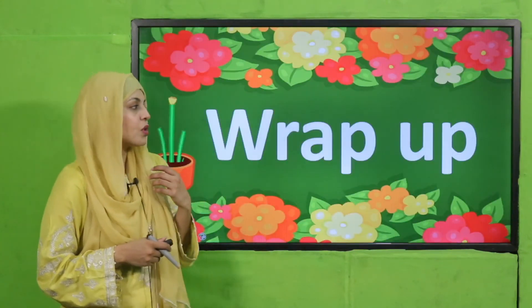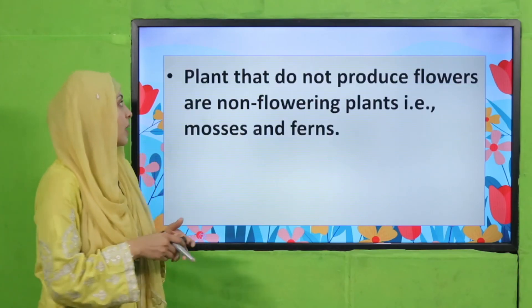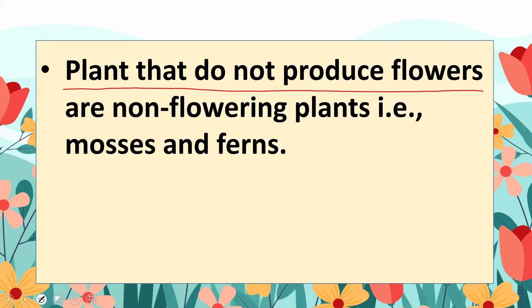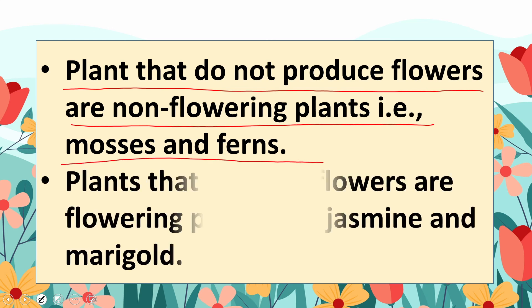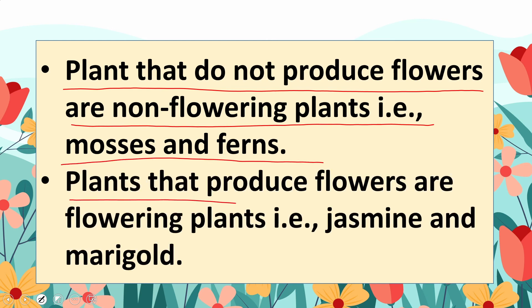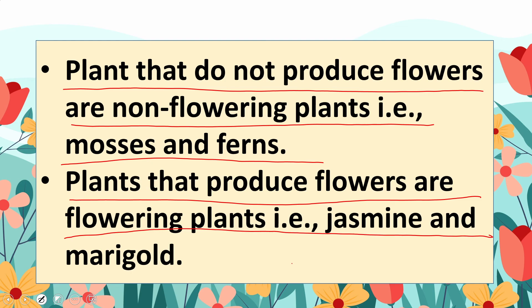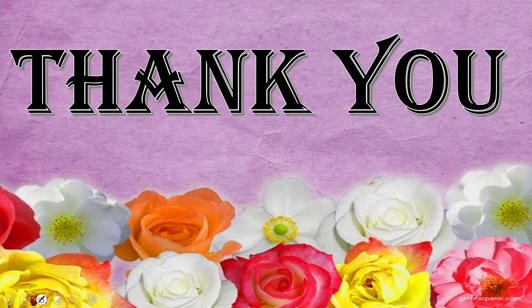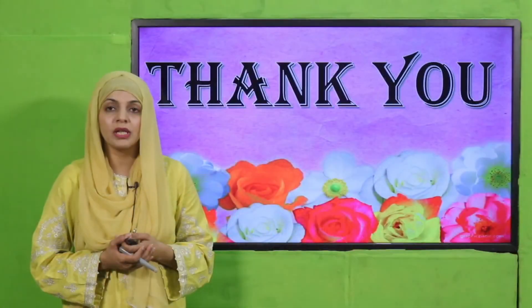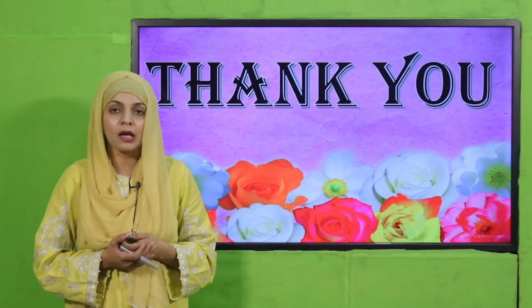Now is the time for wrap-up. Today we have learned that plants that do not produce flowers are non-flowering plants, like mosses and ferns. Plants that produce flowers are flowering plants, for example jasmine and marigold. My dear students, I hope you have enjoyed today's lecture. Keep everybody around you safe. Have a good day. Thank you so much and Allah bless.